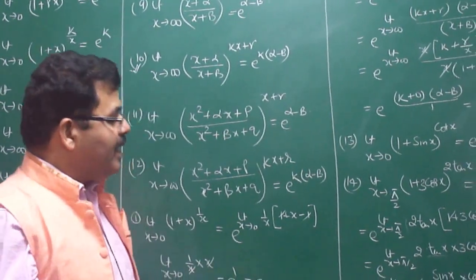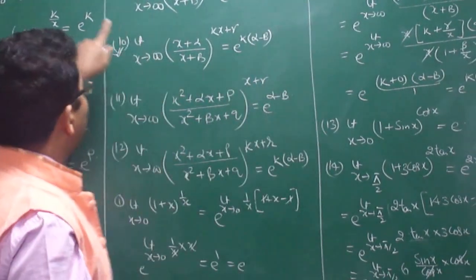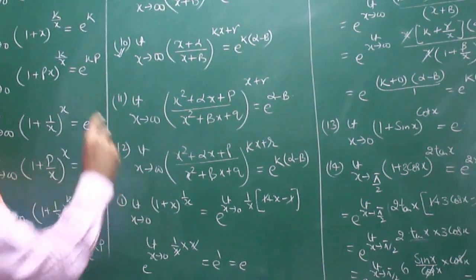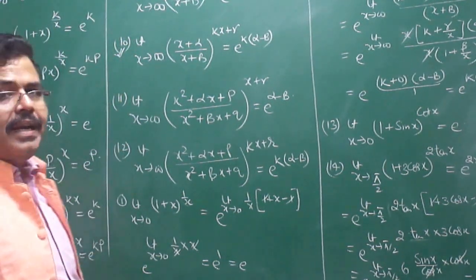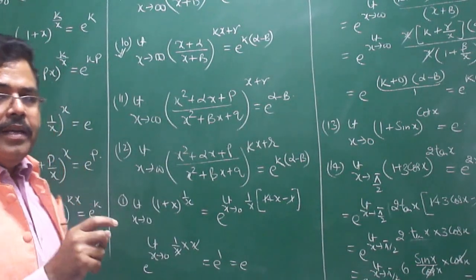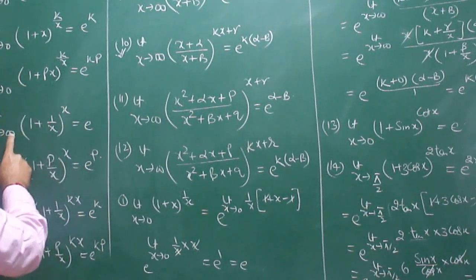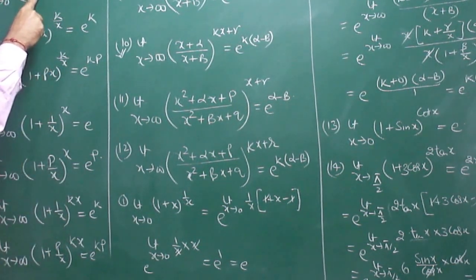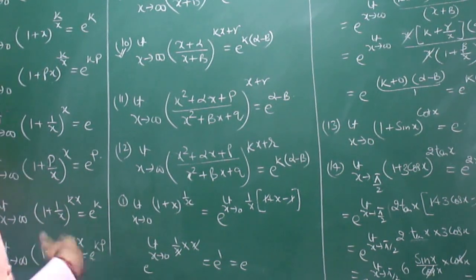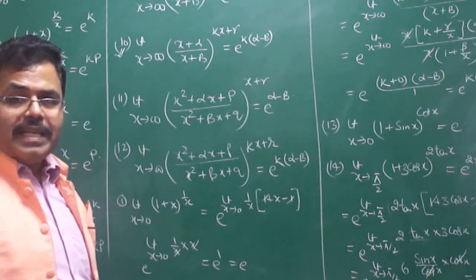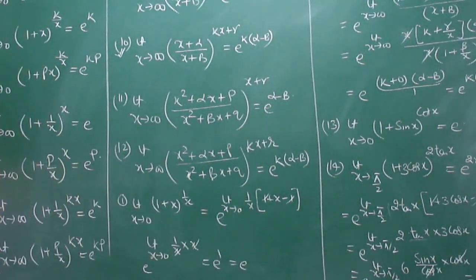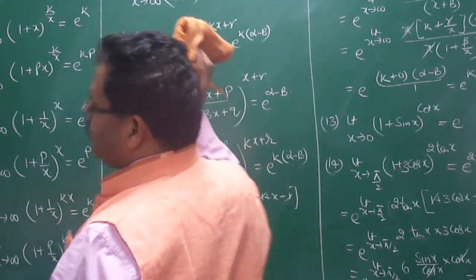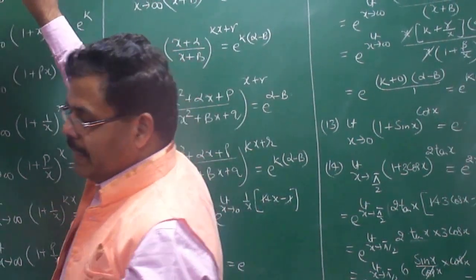I hope you now understand what needs to be done. All these formulas you need to remember — but more than formulas, these are all concepts. The underlying concept is: when x tends to 0, what happens, and when x tends to infinity, replace x with 1/x. And if any constant is multiplied anywhere, it comes into the power of e. We have proved this with several questions. The remaining questions you can prove at home. To solve these types of questions, you do not need to think very hard — you can solve them very easily.